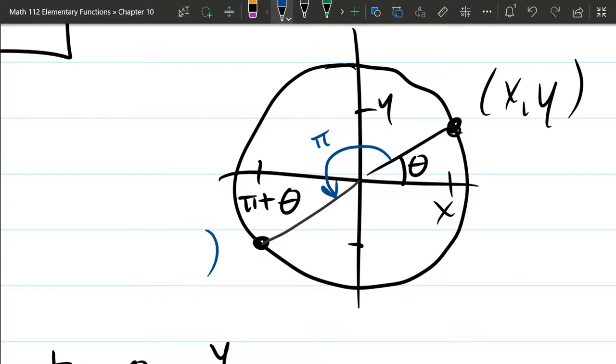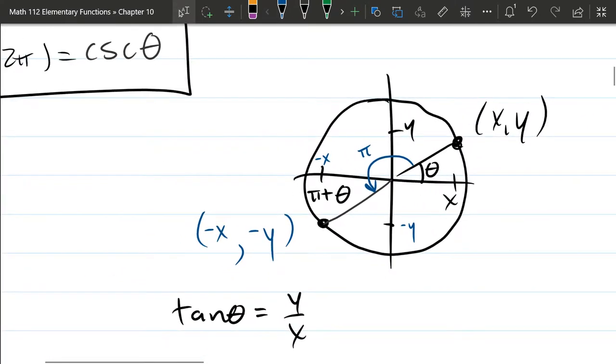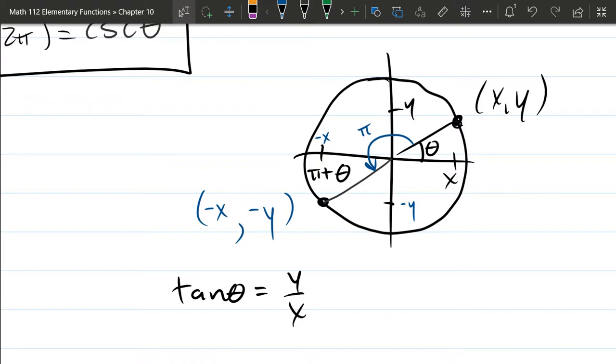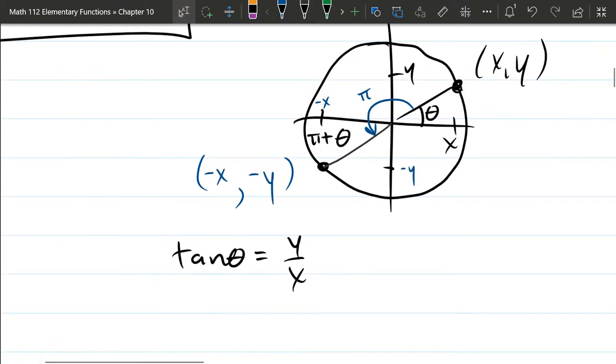Well, our x-coordinate is going to become negative. It's the same distance from the origin or the same absolute value as the original x-coordinate, but it's going to change from either positive to negative or negative to positive. So our x becomes the opposite sign. The y-coordinate also goes from, if it was positive, it's now negative. And if it was negative, it's now positive. So what that means is x became negative and y became negative. Now, tangent theta is y over x. Tangent of theta plus π.